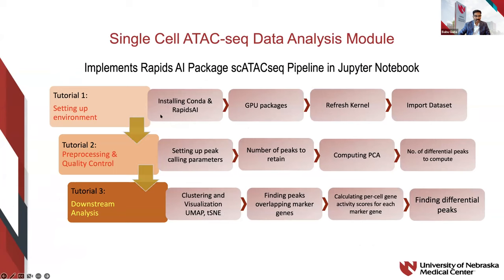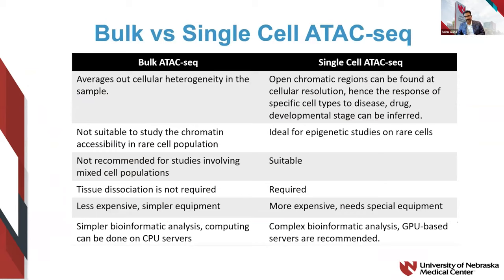Single-cell ATAC-seq has three tutorials — setting up the environment, pre-processing and QC, followed by downstream analysis similar to bulk. Bulk analysis gives average values across the heterogeneity in the sample, whereas for single-cell you can specifically identify cell types responding to different diseases or drug conditions. Single-cell is highly recommended for studies involving mixed cell populations. Bioinformatically, single-cell is more complex because it involves cluster-level peak analysis and is also more expensive to perform.